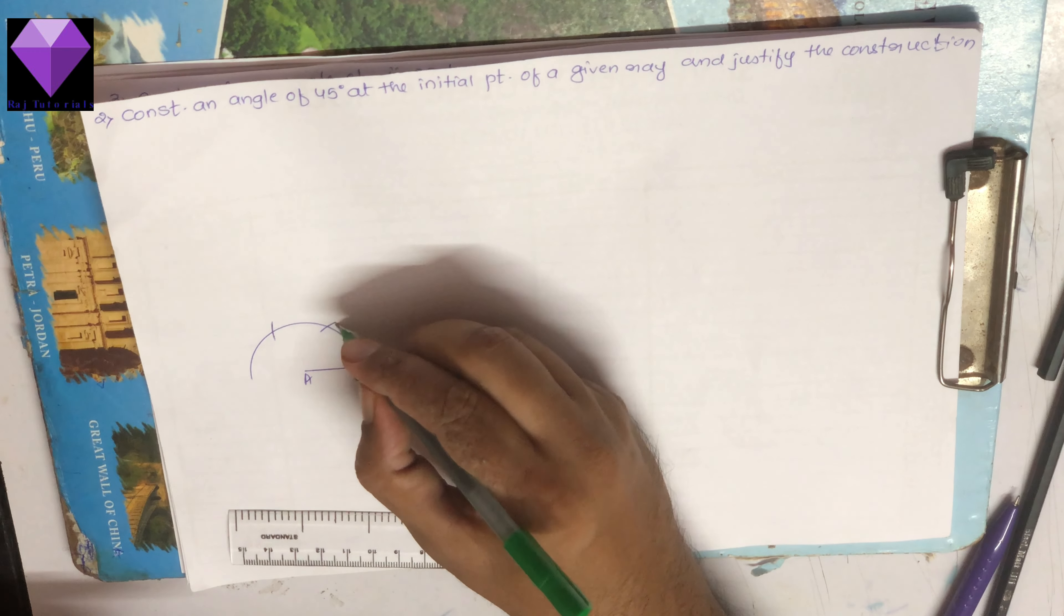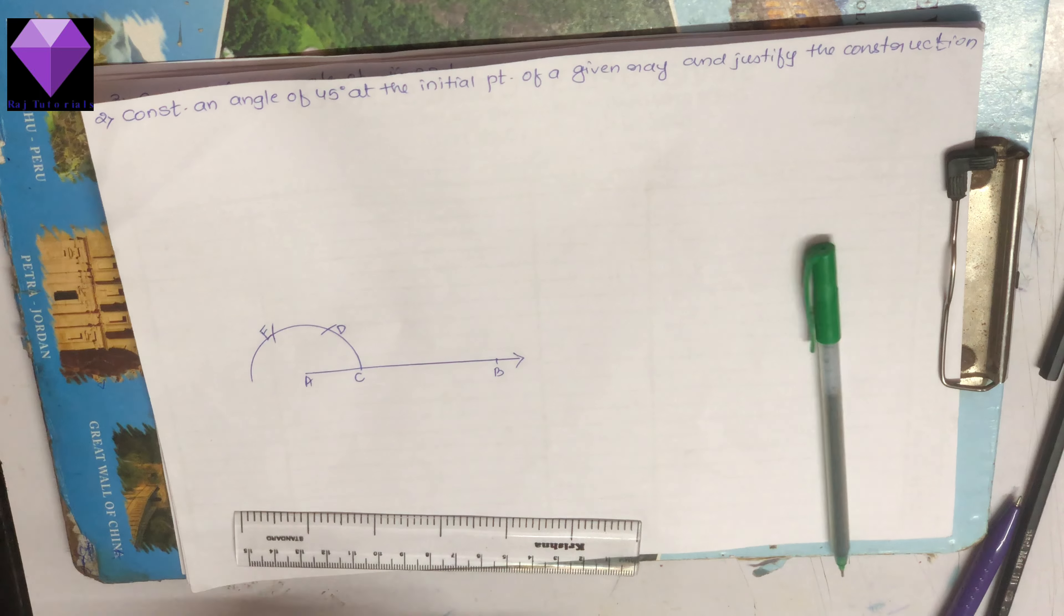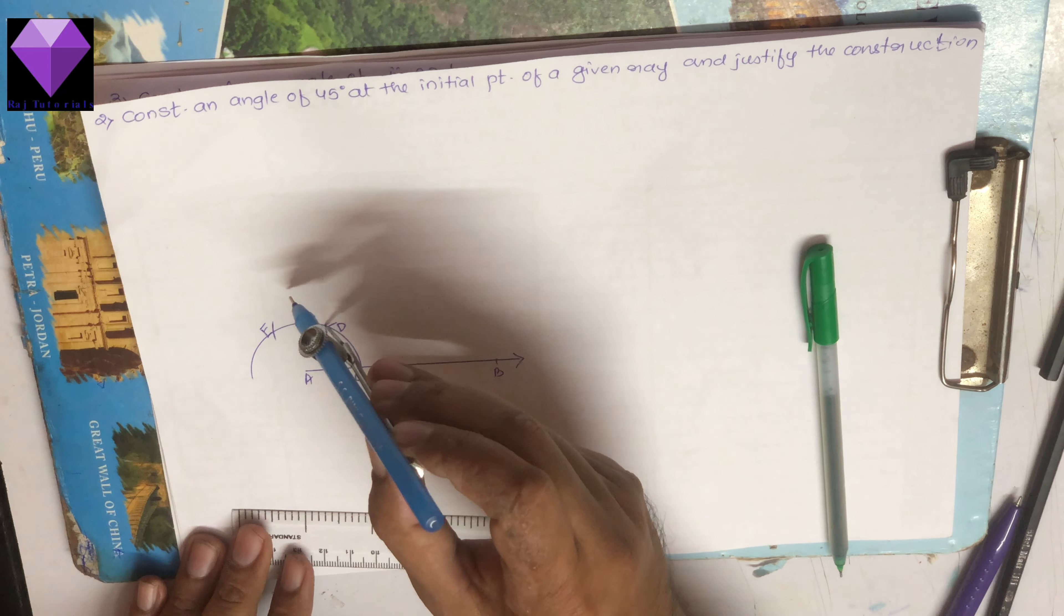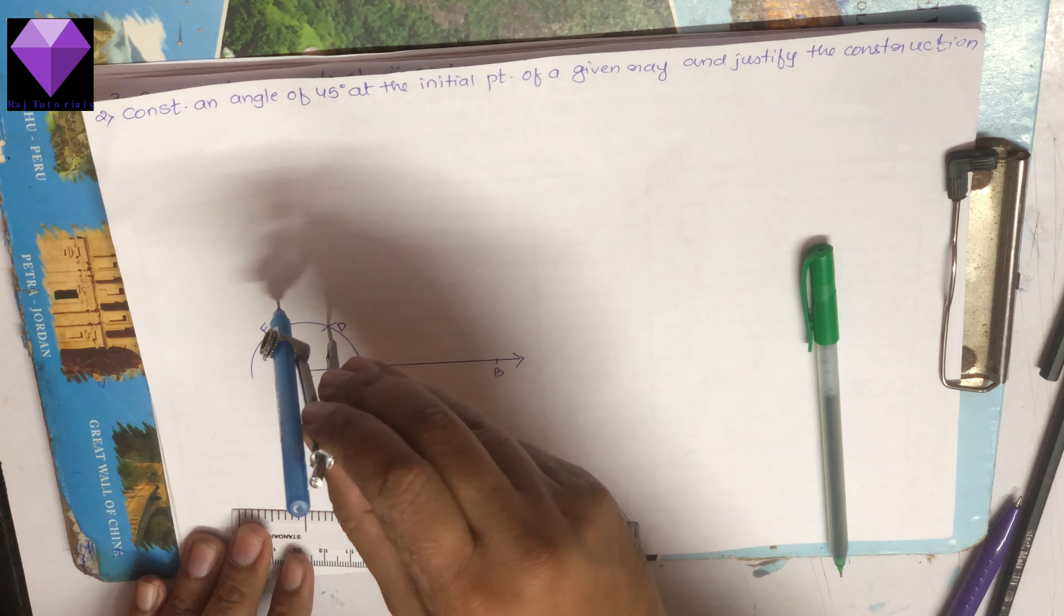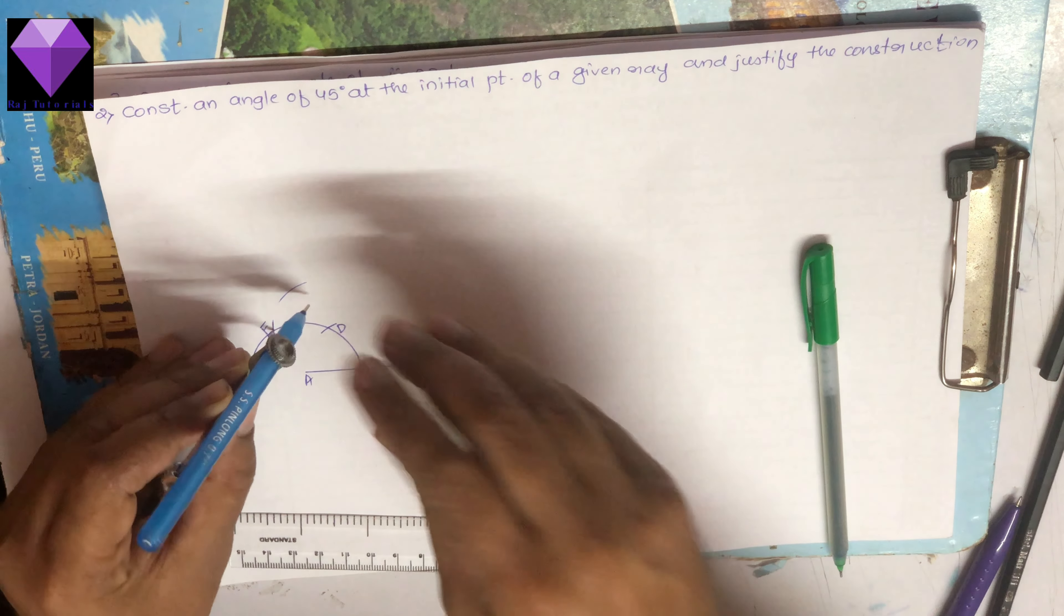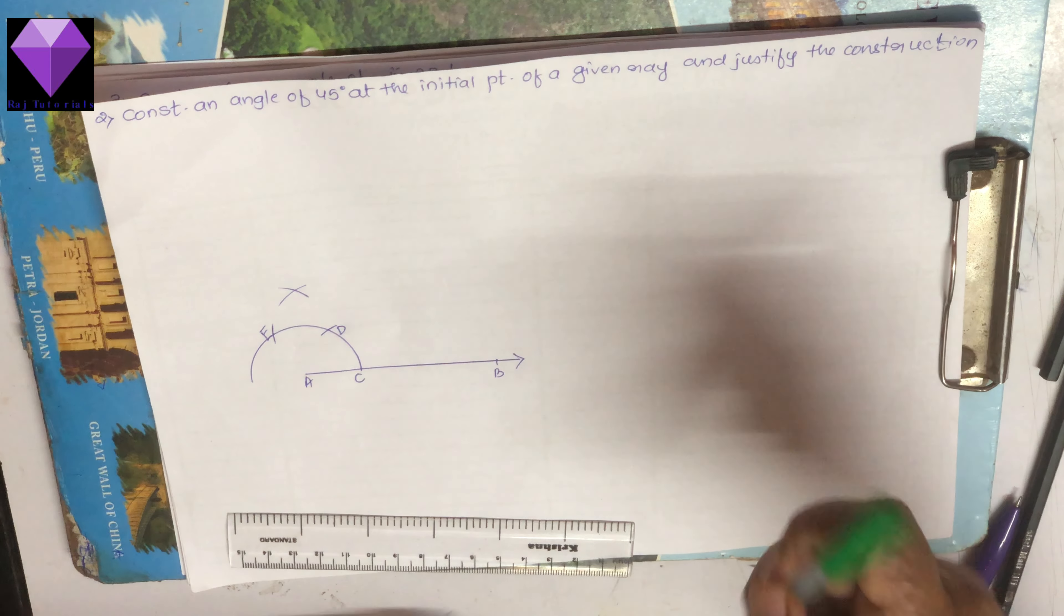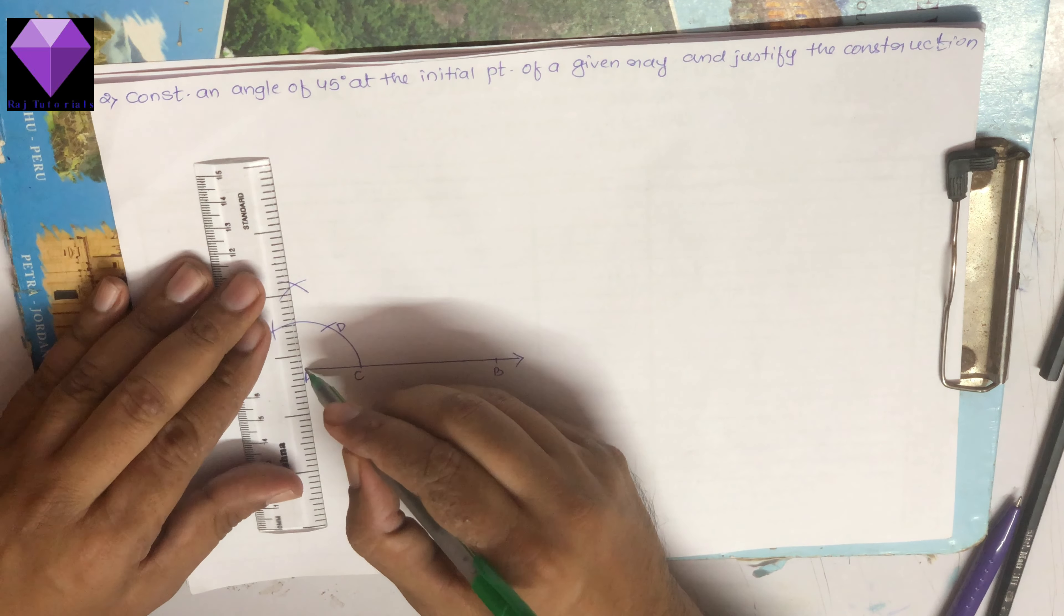So this is my D point, this is my E point. Now with D and E as centers, I am bisecting D and E points to get a 90 degree angle. So this is my 90 degree angle.